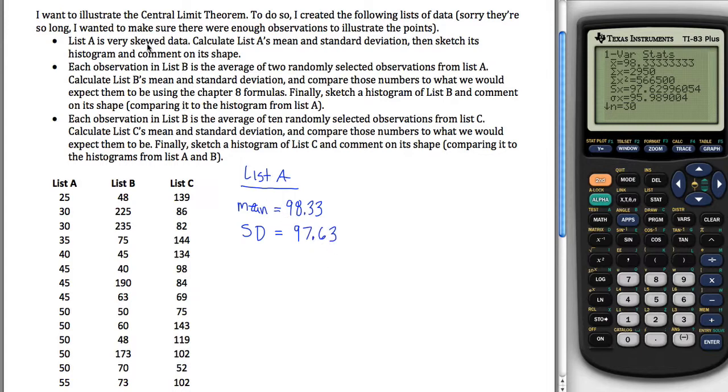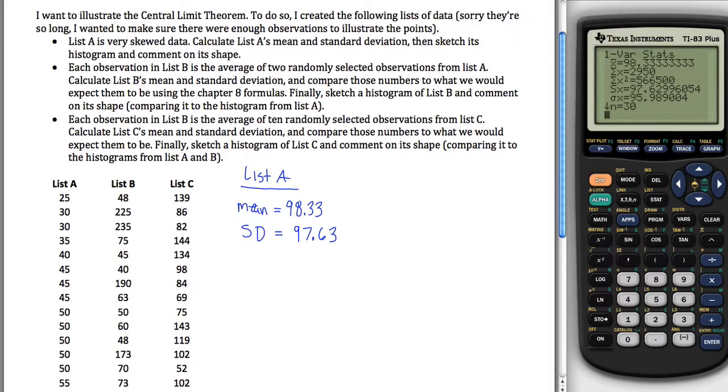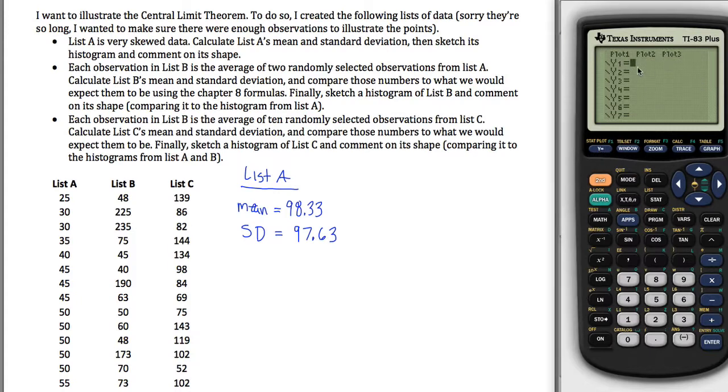So this is kind of my starting spot. This is List A, mean and standard deviation. Now what it wants me to do is sketch a histogram and comment on its shape. Now we can sketch a histogram of that data. It should be very right skewed, I think we said, but let's take a look. The way you make a histogram is you go under stat plots here. Actually maybe first you should hit Y equals, this Y equals key and make sure you don't have any equations on. If you do, either clear them out or unhighlight the equals sign to get them to not show up.